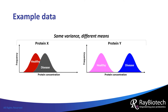For protein X and protein Y, the means of their distributions between healthy and diseased patients are different, but they have the same variances. Which protein is more statistically different between the two groups? Protein Y.